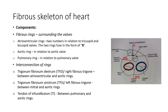Interconnecting these four rings, you will see the trigonum fibrosum dextrum — the right fibrous trigone — located between the atrioventricular and aortic rings. Then there is the trigonum fibrosum sinistrum — the left fibrous trigone — located between the mitral and aortic rings.